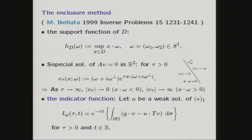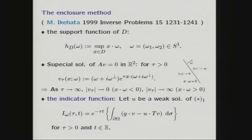We define the indicator function. Let U be a weak solution of problem (★₁). We define the indicator function I_{ω,τ}(t) for positive parameter τ and real parameter t, where the function b is defined as above. For direction vector ω, the value of the indicator function is obtained from the boundary data g and U on ∂Ω.